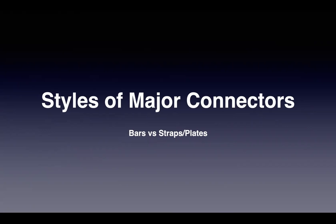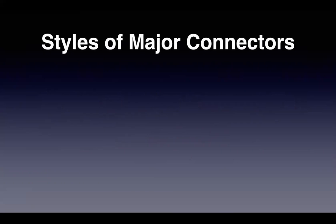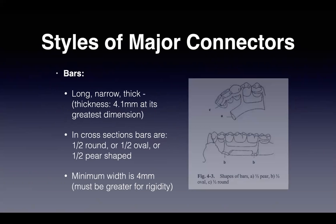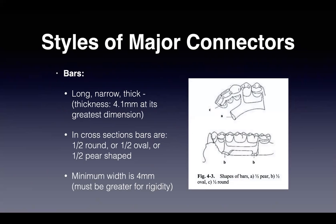Major connectors exist in two different types: bars or straps/plates. Bars are long, narrow, and thick — maximum 4.1 millimeters in cross-section — and are half-round, half-oval, or half-pear shaped. The minimum width of a bar is 4 millimeters, and it must be greater for rigidity. In the diagram, 'A' indicates the half-pear cross-section, 'B' the half-oval, and 'C' the half-round cross-section.